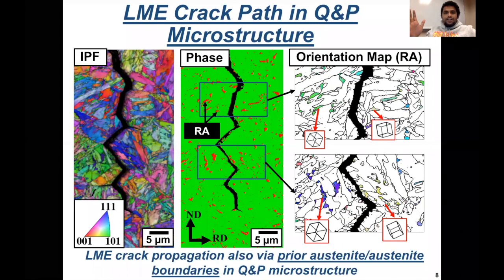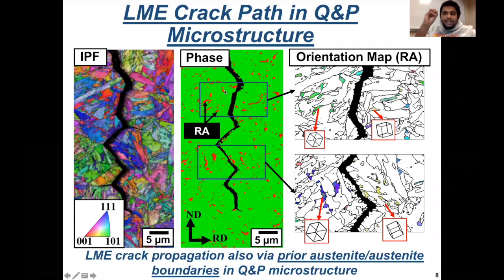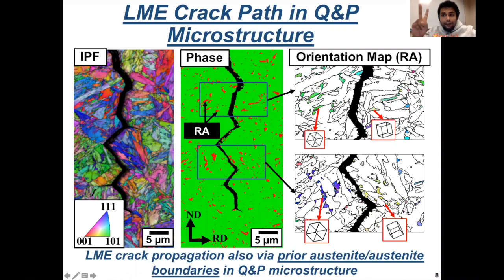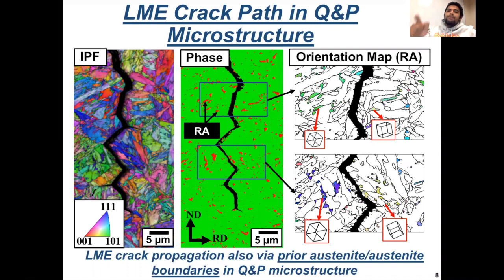So the prior austenite grain boundaries are the preferred path for LME cracking in the martensitic microstructure. In the quenched and partitioned microstructure, which has two phases — the green is martensite and the red is austenite — we carefully looked at the retained austenite orientations on the two sides of the LME crack. We observed that the retained austenite orientations on the two sides of the LME crack are different, which means that again in the Q&P microstructure, the prior austenite grain boundaries were responsible for LME cracking.